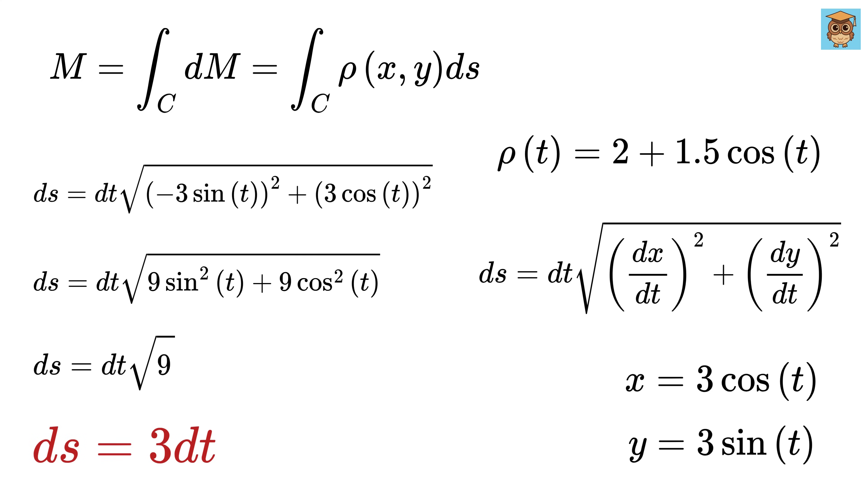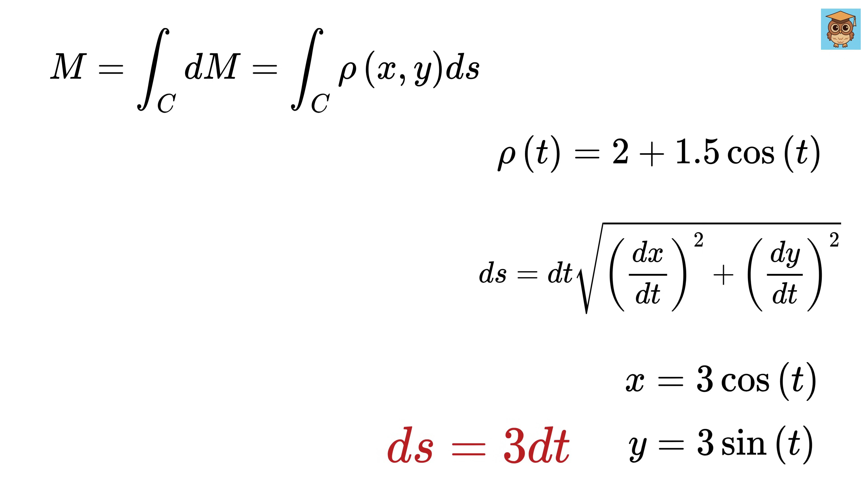By the way, this is just for some fun. If you integrate this ds, we get the length of this quarter circle. So integrate 3 dt from 0 to π over 2 to get 3π over 2, which is nothing but the perimeter of this quarter circle. Amazing!